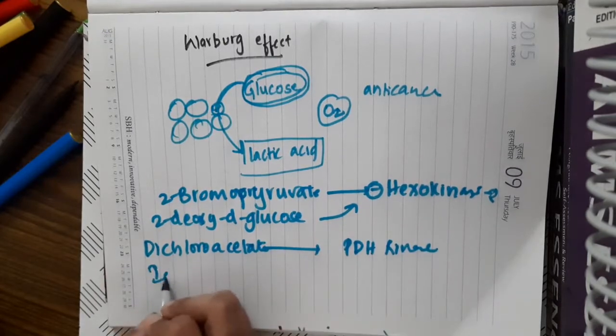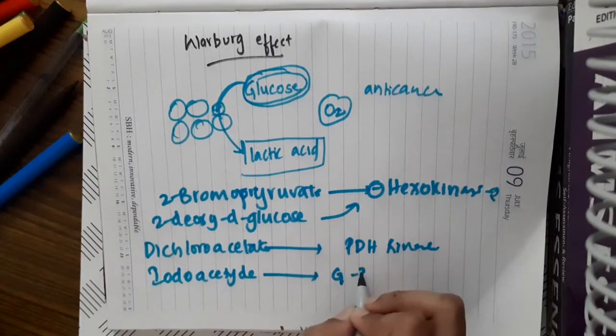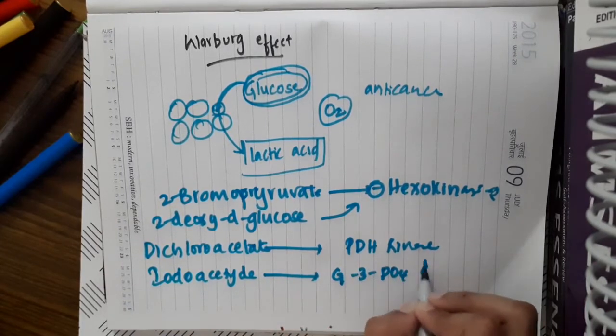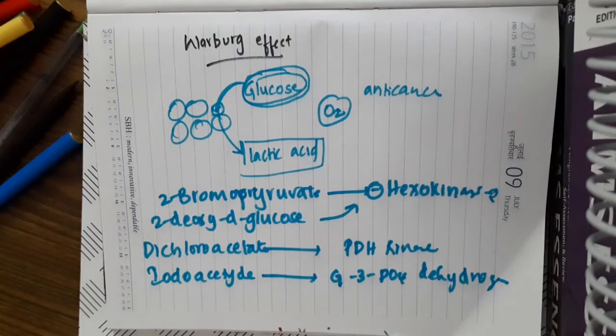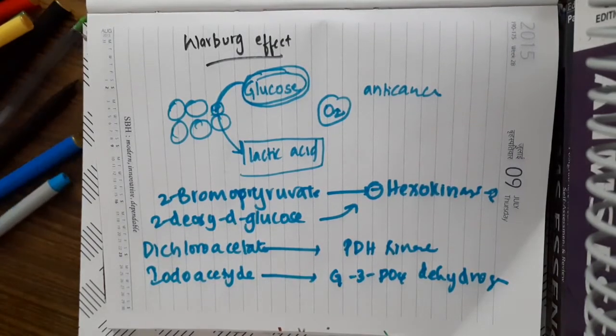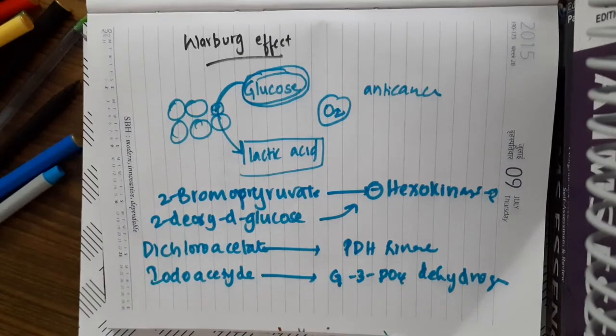Iodoacetate inhibits the enzyme glyceraldehyde-3-phosphate dehydrogenase. By inhibiting glycolysis, the requirement of glucose for the cancer cells is not met. So cancer cells do not have energy for replication and they get killed.